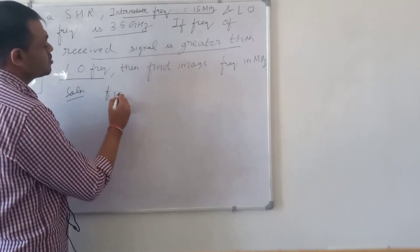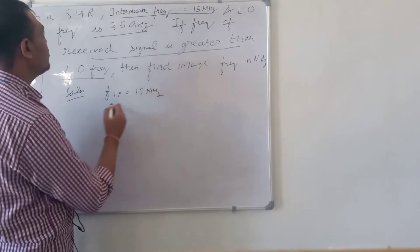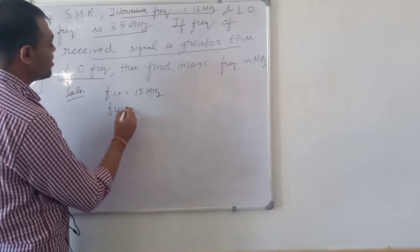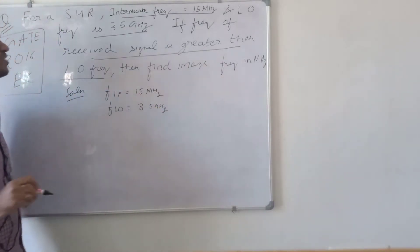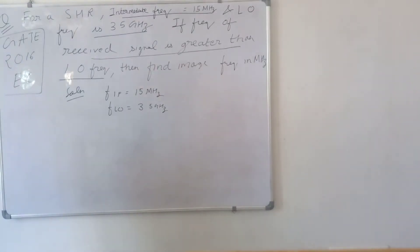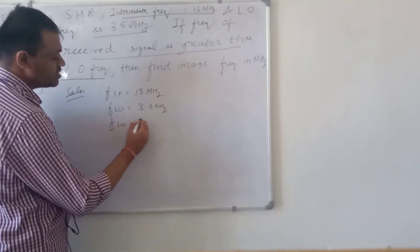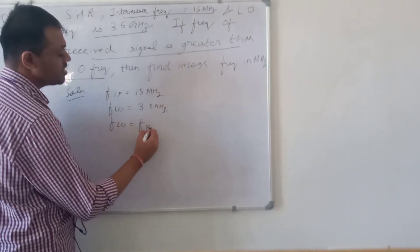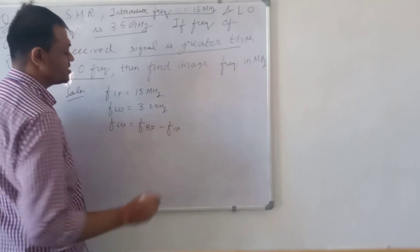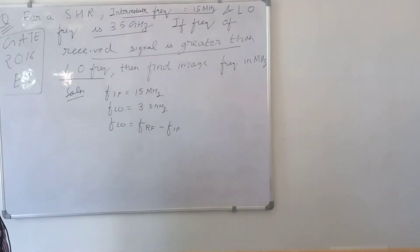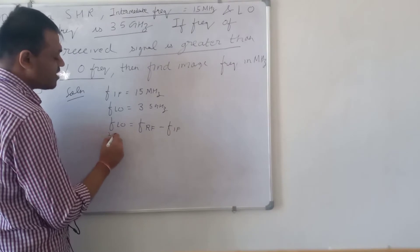So FIF is 15 megahertz and FLO is 3.5 gigahertz. Since the frequency of the received signal is greater than the local oscillator frequency, the formula we use is: FLO equals FRF minus FIF, meaning the RF frequency minus the IF frequency.